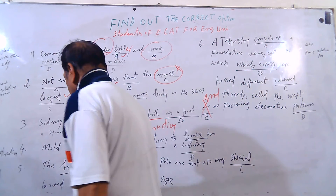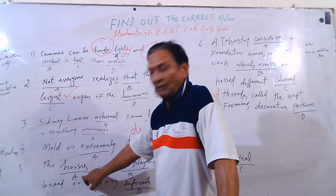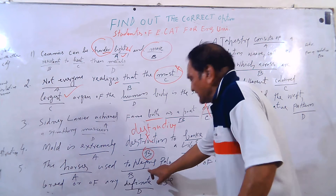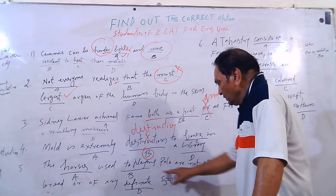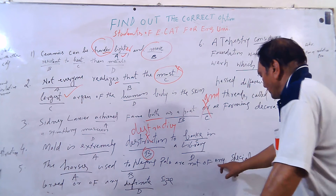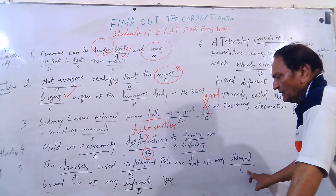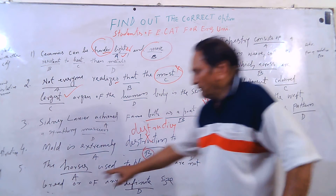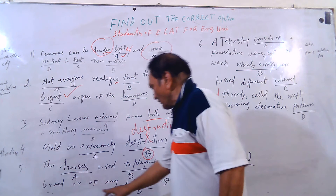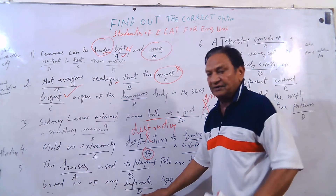Option A: the horses used to play. Option B: polo are not of any special. Option C: is a clear breed. This is breed. All of any definite size. Definite option D.